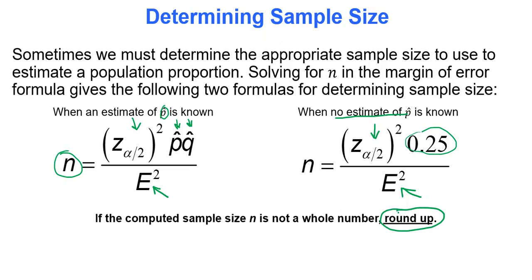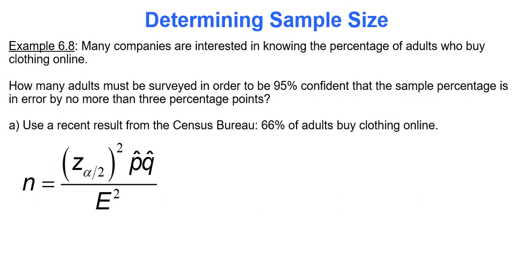Many companies are interested in knowing the percentage of adults who buy clothing online. How many adults must be surveyed in order to be 95% confident that the sample percentage is in error by no more than 3 percentage points? And we're going to use a recent result from the Census Bureau that 66% of adults buy clothing online. The important thing here is we're using a 95% confidence level, which means instantly that our critical value for a 95% confidence level is always 1.96.